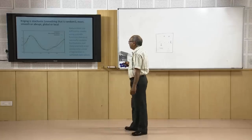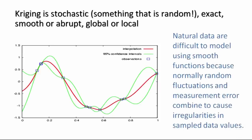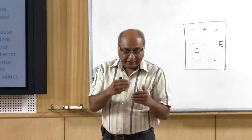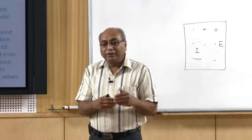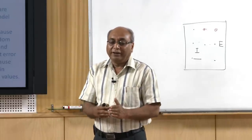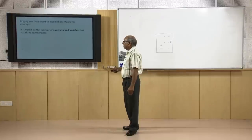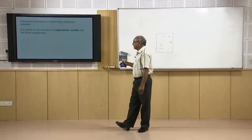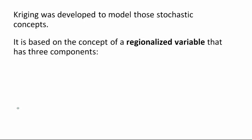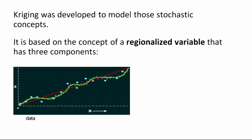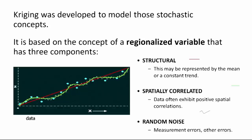Natural data is difficult to model using smooth functions because random fluctuations and measurement error combine to cause irregularities in sample values. For example, elevation points for the Himalayas differ from those for an endogenetic plain. Kriging was developed to model those stochastic concepts. It is based on the concept of a regionalized variable having three components: structural, spatially correlated, and random noise.